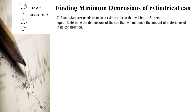When we analyze the problem, we are talking about a cylindrical can. The formula for the volume of a cylindrical can is πr²h, and the surface area of the cylindrical can can be written as 2πrh plus 2πr².